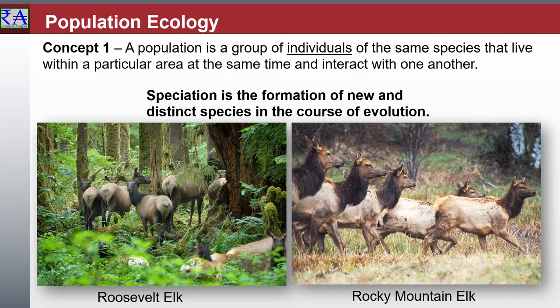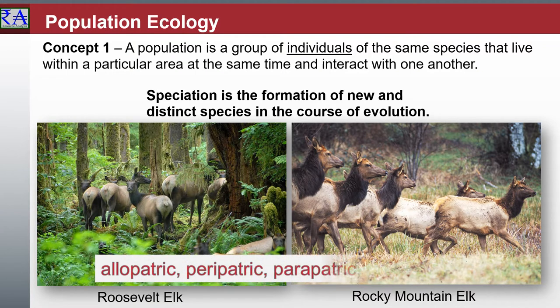There are four geographic modes of speciation in nature, based on the extent to which speciating populations are isolated from one another: allopatric, peripatric, and sympatric. Focus on these terms, know how to define them, apply them to populations you observe, and be able to give examples of how you understand these instances.